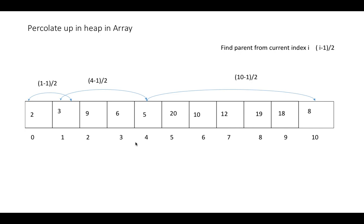In this final array, all elements are satisfying the min heap property. For example, element 5 is at index 4, so its left child is at index 2×4+1 = 9, and its right child is at 2×4+2 = 10. Both its children are greater than 5, so 5 is the minimum among them. That's how we do the percolate up operation.